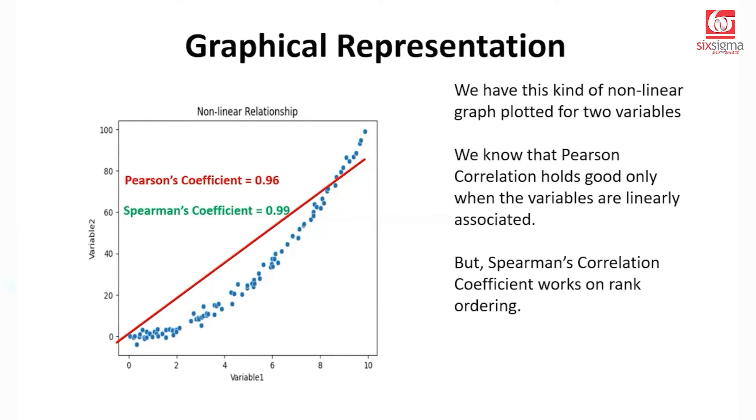Second point is the nature of the data is different. Pearson's correlation coefficient requires the data to be continuous in nature. Spearman's rank correlation requires the data to have ranks available.